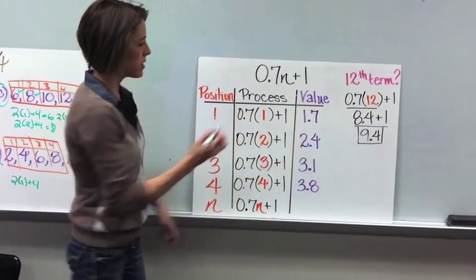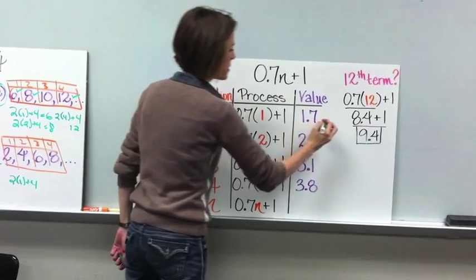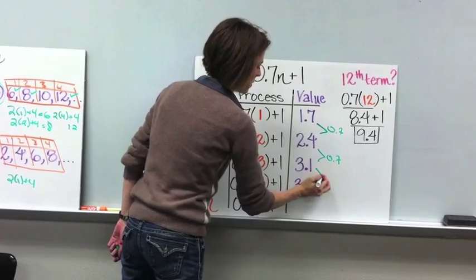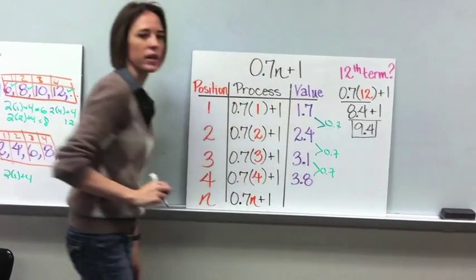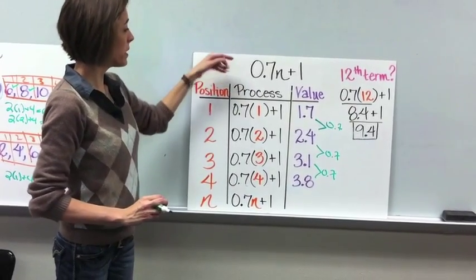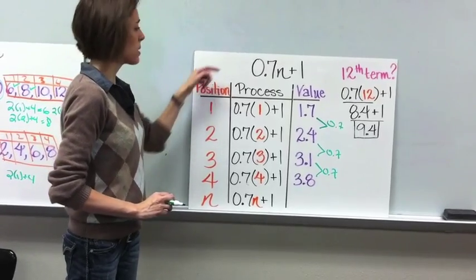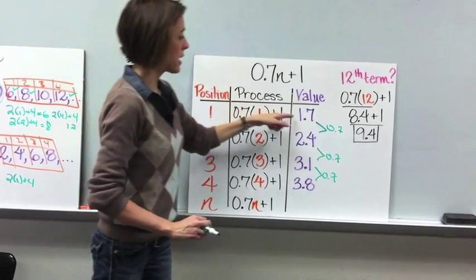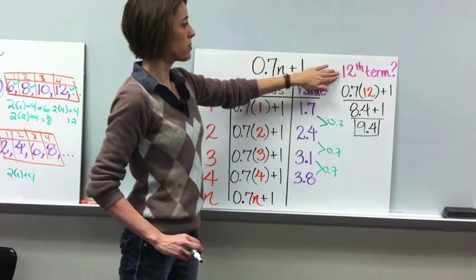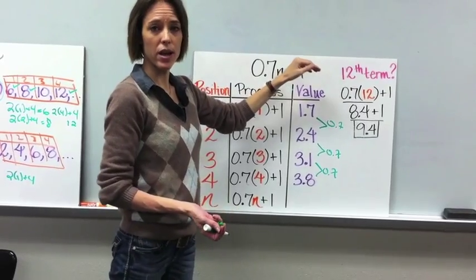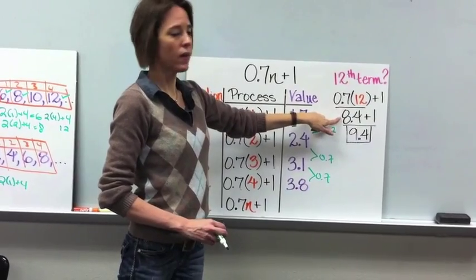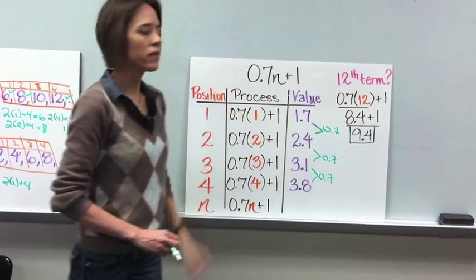If you go back and check, the common difference between each term should be 0.7. If you don't get 0.7, then something you did was wrong. Remember, all you're doing is taking the position or term number, substituting it into the expression, and getting the value. You should have your first four terms. It then asks for the 12th term — so what number do you plug in for n? 12. So 0.7 times 12 is 8.4, and then you add 1, leaving you with 9.4.